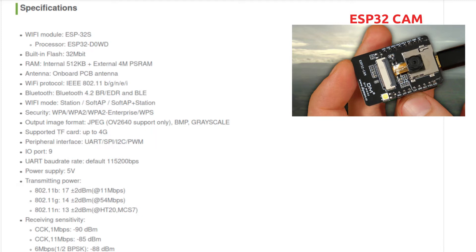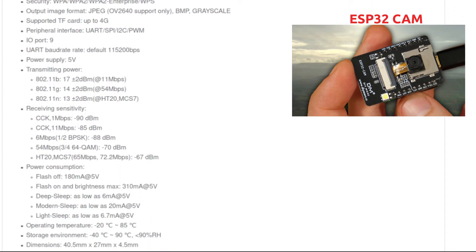The transmission power varies by speed. Receiving sensitivity is -90 dBm at 1 Mbps, -85 dBm at 11 Mbps, and -88 dBm at BPSK. Power consumption: with flash off it draws 180 mA at 5V; with flash on at maximum brightness it draws 310 mA at 5V.